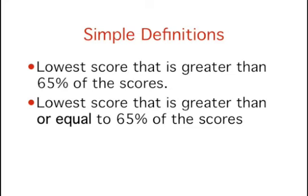There are two simple definitions of percentile. We will use the 65th percentile as an example. According to the first definition, the 65th percentile is the lowest score that is greater than 65% of the scores. This differs slightly from the second definition that considers the 65th percentile to be the lowest score that is greater than or equal to 65% of the scores.